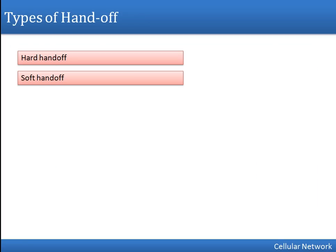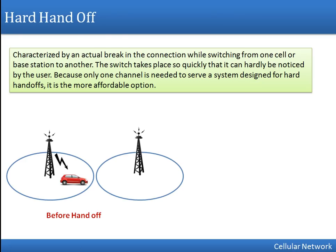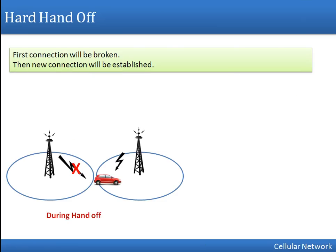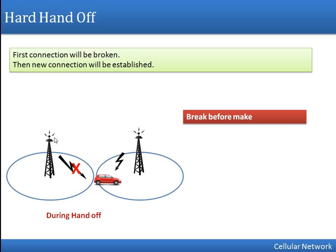There are two types of handoff: hard handoff and soft handoff. In hard handoff, when a user moves to another cell, the existing connection is first broken and then a new connection is established — you can remember this as 'break before make.' The new base station starts handling traffic only once the user is disconnected from the old base station. This is hard handoff.